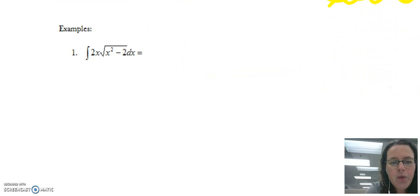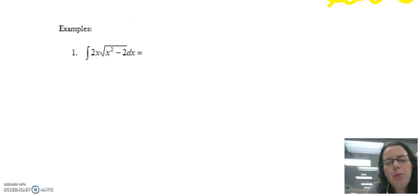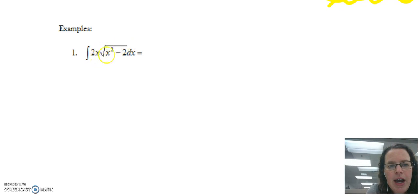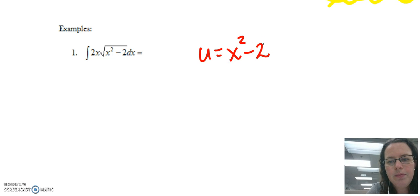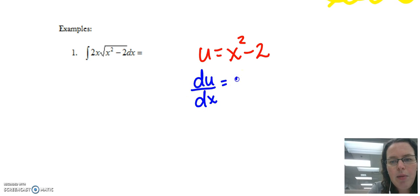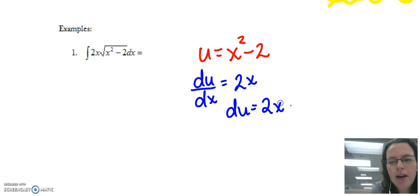Let's dive in with an example: the integral of 2x times the square root of x²-2 dx. We have a product, and there's no product rule for integration, so we try u-substitution. Inside the square root is a composition, x²-2, so we let u = x²-2. Taking the derivative of u with respect to x gives du/dx = 2x, so du = 2x dx.